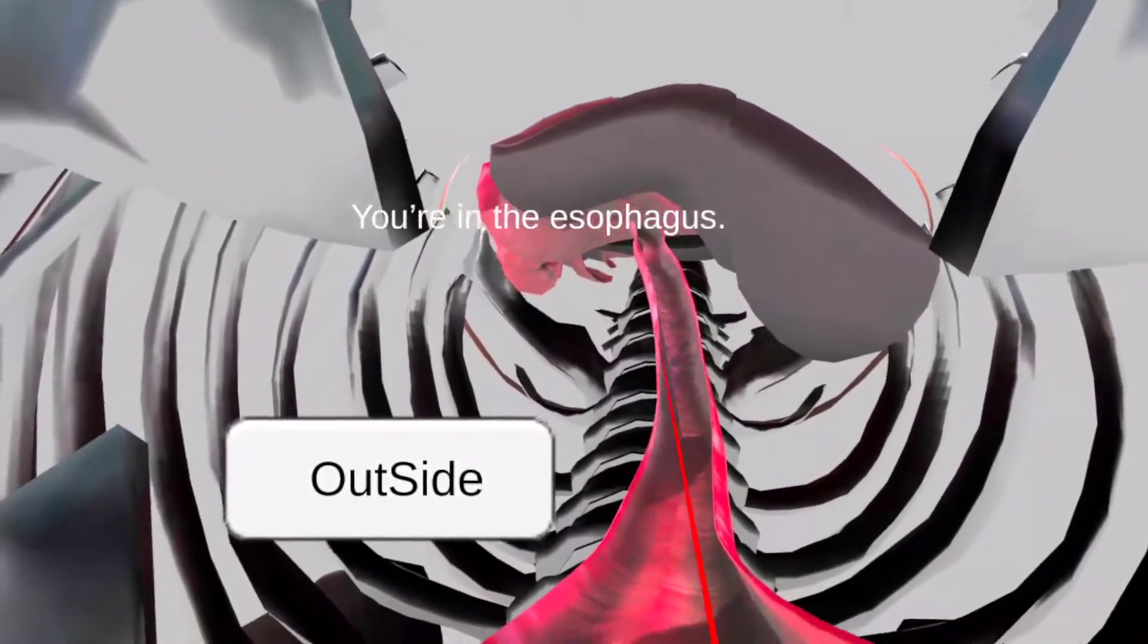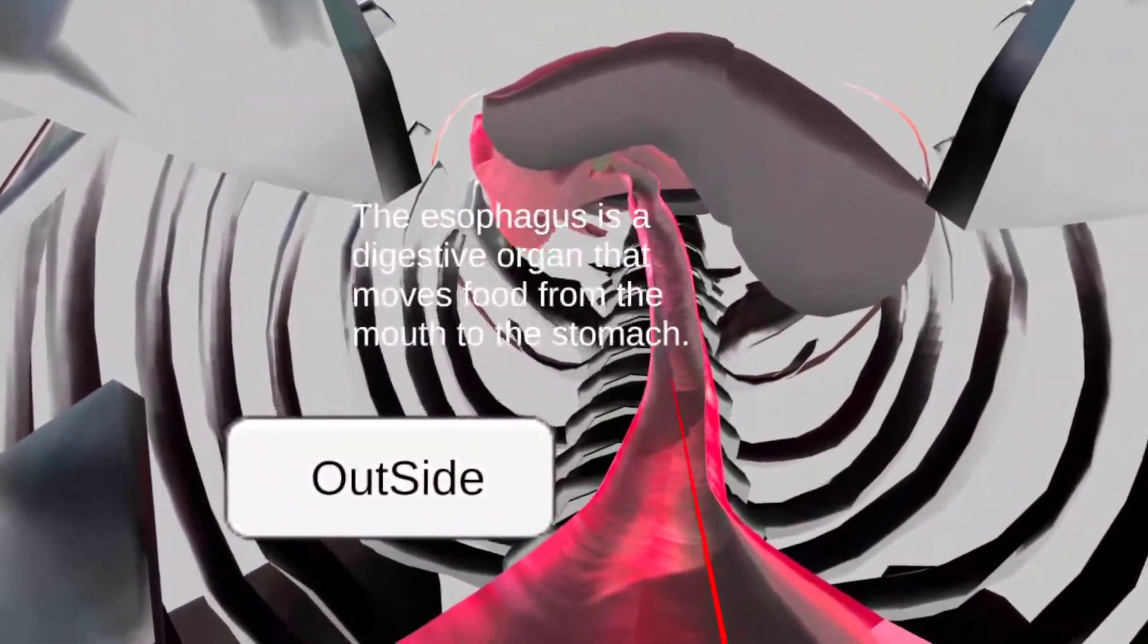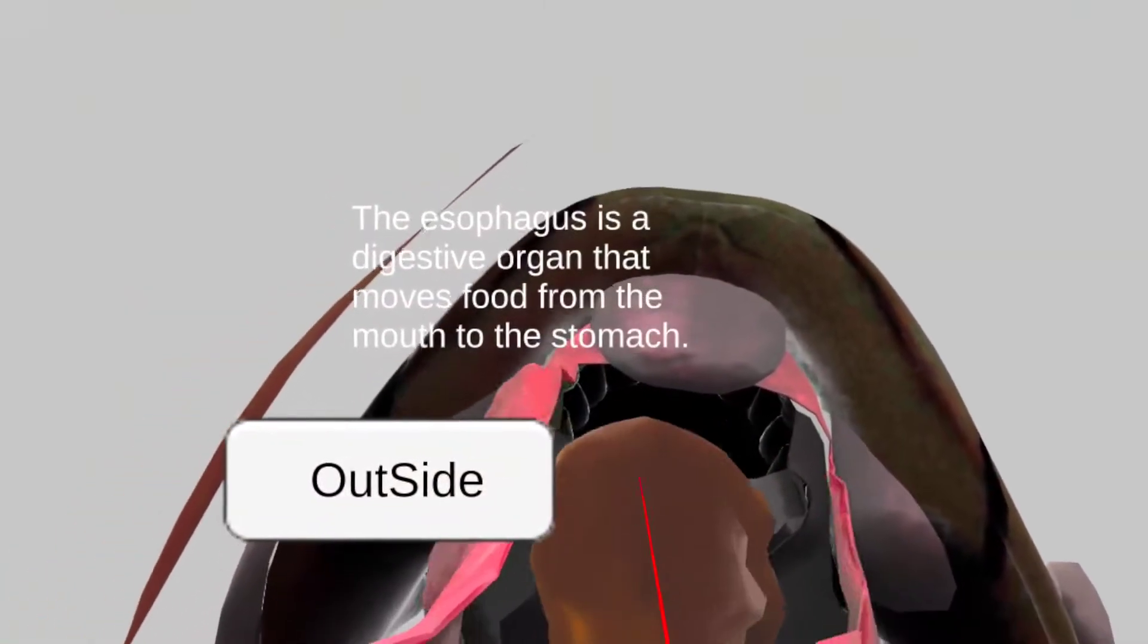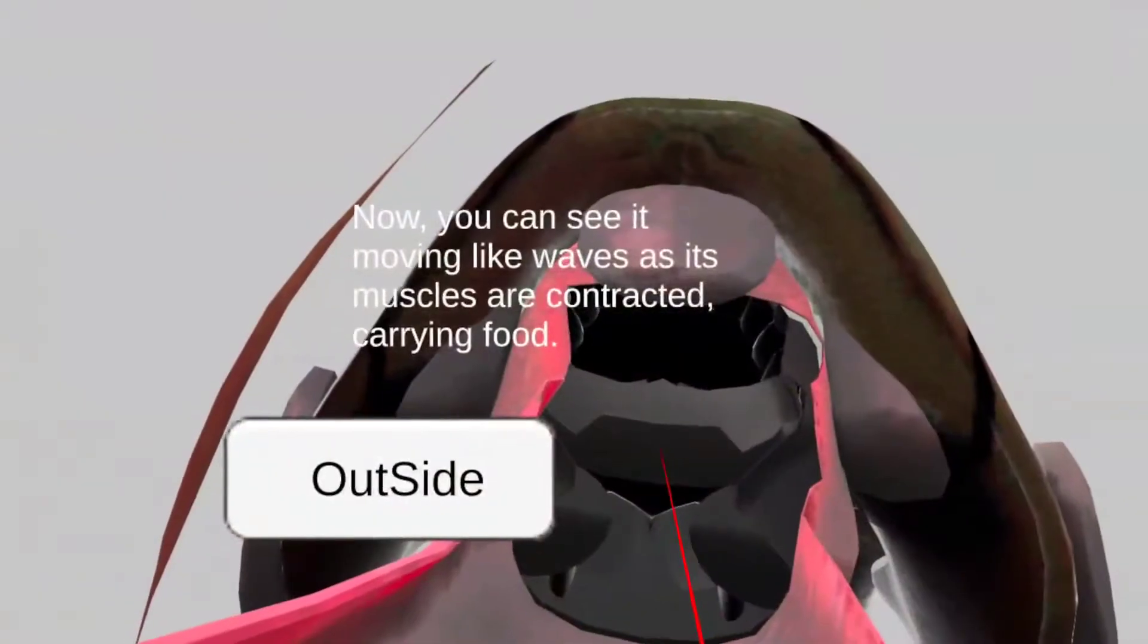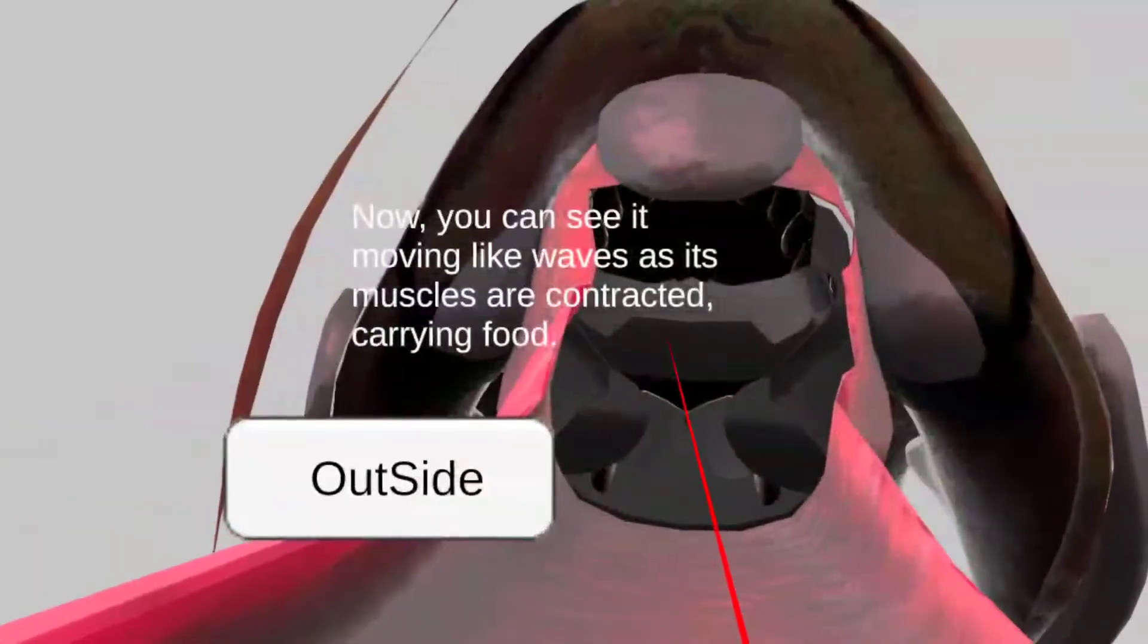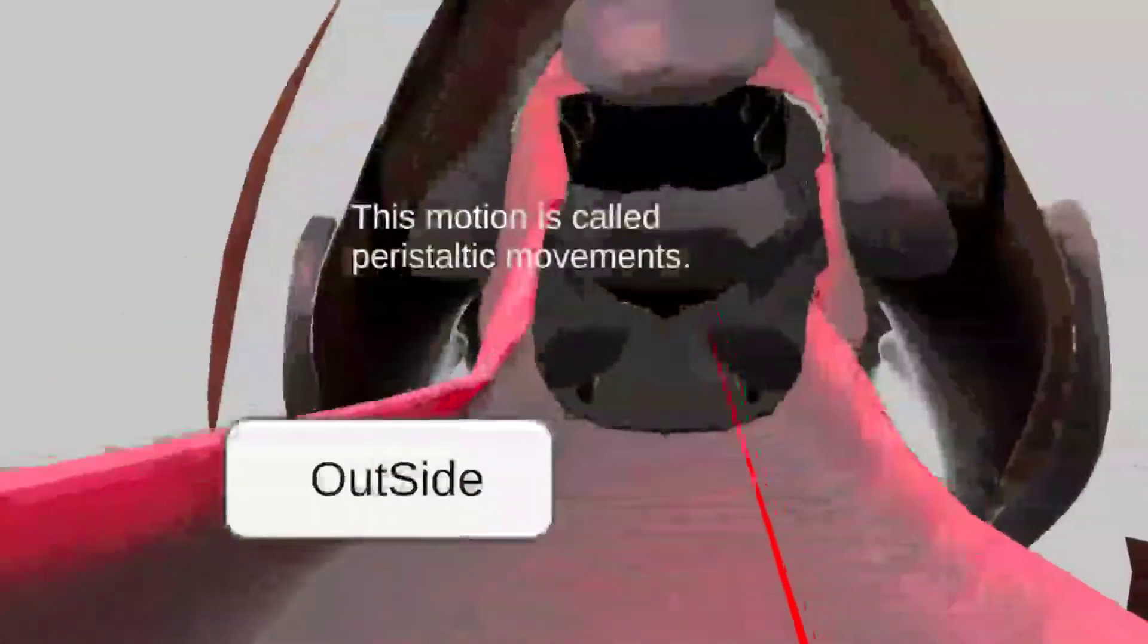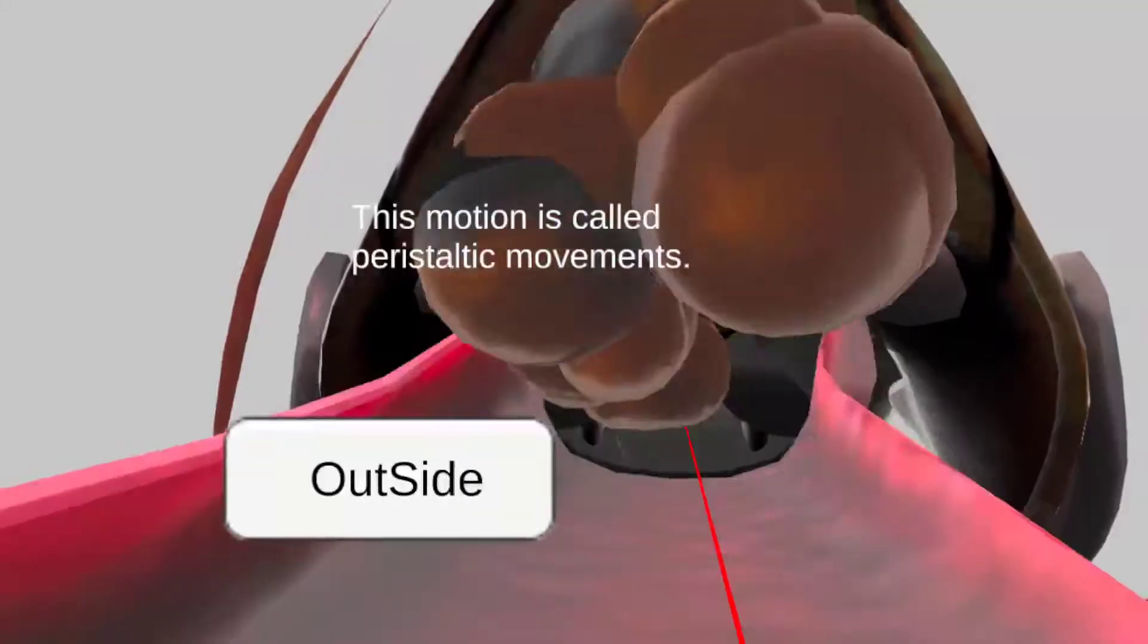You're in the esophagus. The esophagus is a digestive organ that moves food from the mouth to the stomach. Now, you can see it moving like waves as its muscles are contracted carrying food. This motion is called peristaltic movement.